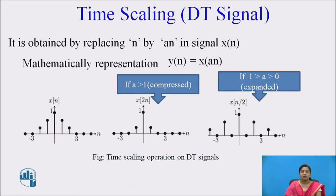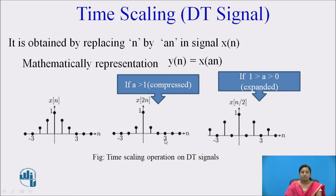Also recall the time scaling property of DT signals. In the time scaling property, n is replaced by alpha·n, so y(n) = x(alpha·n). If the alpha value is greater than 1 — for example x(2n) — then the signal is compressed. If the alpha value is between 0 and 1, then that signal is expanded.